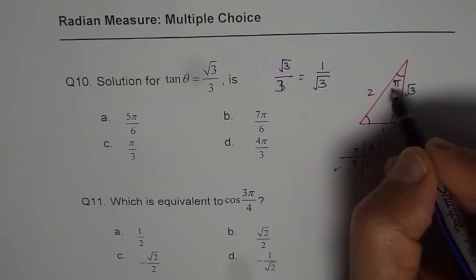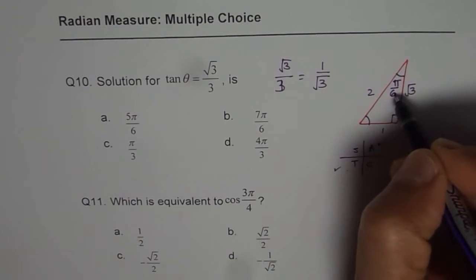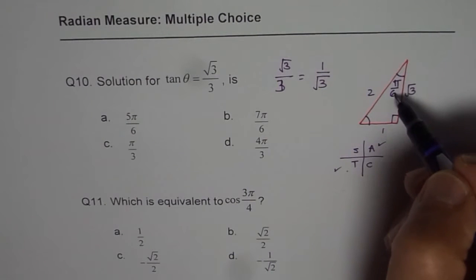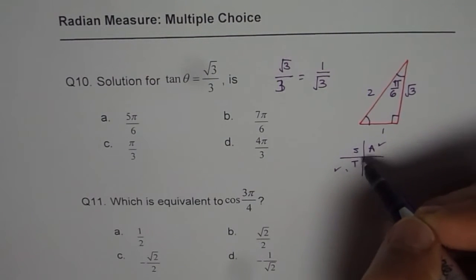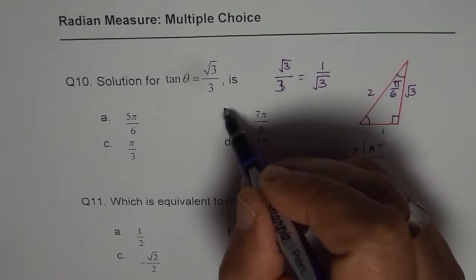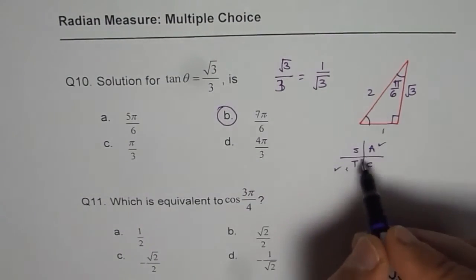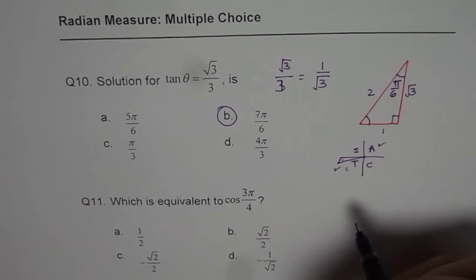So our related acute angle is π by 6. Related acute angle is π by 6 and we could be in these two quadrants. 7π by 6 is the right choice since that is an angle here.